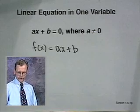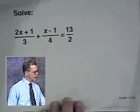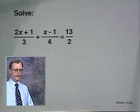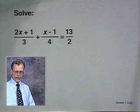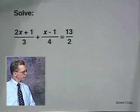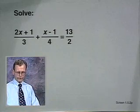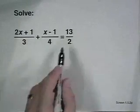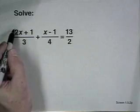Some equations involve fractions. For most problems, that's solved by removing the denominators by multiplying by the common denominator. Here's how it works: we're going to multiply both sides of this equation by the common denominator, which is 12.